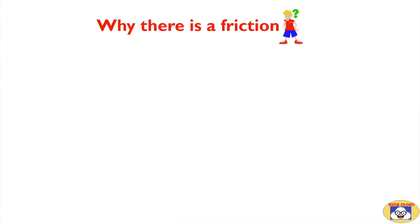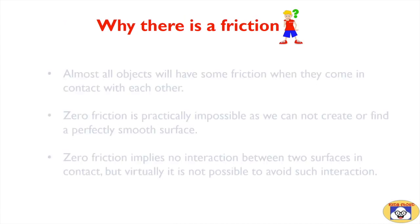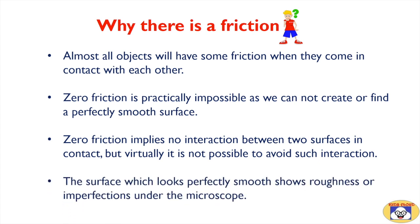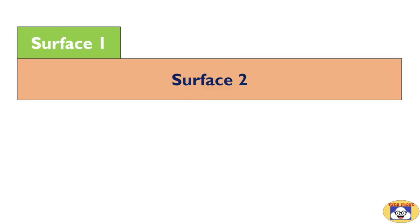So why is there friction? Almost all objects will have some friction when they come in contact with each other. Zero friction is practically impossible, as we cannot create or find a perfectly smooth surface. Zero friction implies no interaction between two surfaces in contact, but virtually it is not possible to avoid such interaction. The surface which looks perfectly smooth shows roughness or imperfections under the microscope.